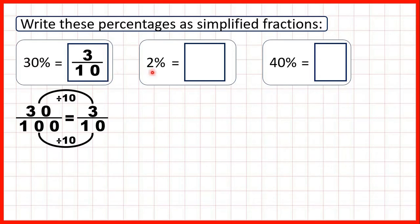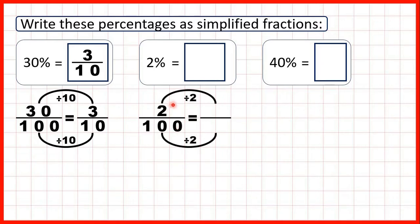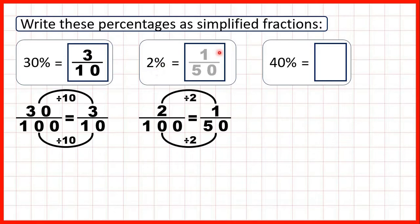Now we have 2 percent, so that's 2 over 100. The highest common factor is 2. So 2 divided by 2 is 1, and 100 divided by 2 is 50. So we can write 2 percent as 1 over 50.